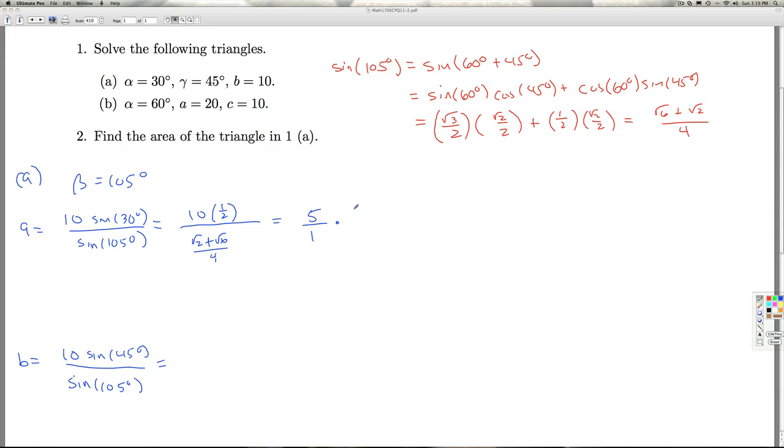So it's 20 over radical 2 plus radical 6.